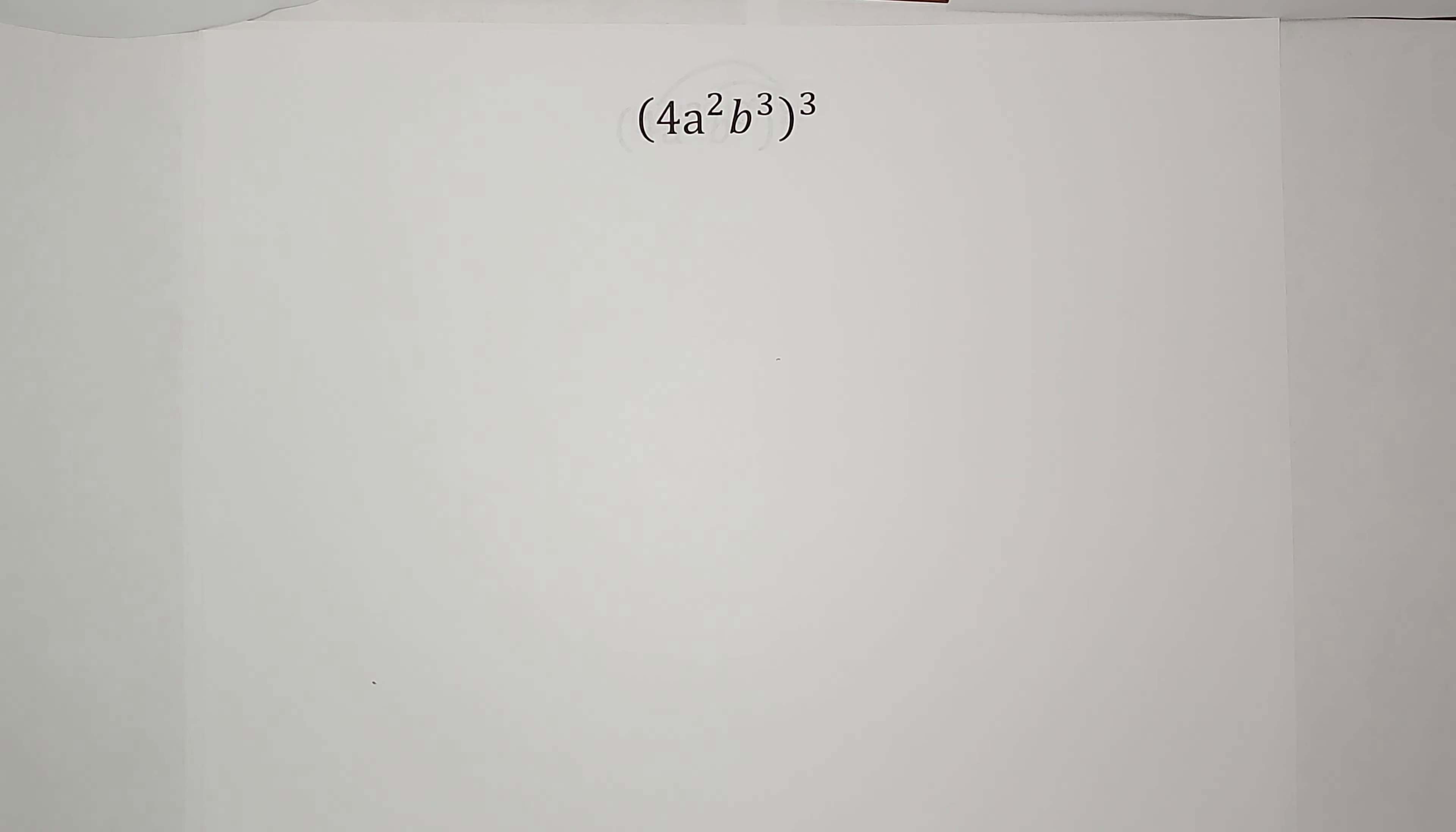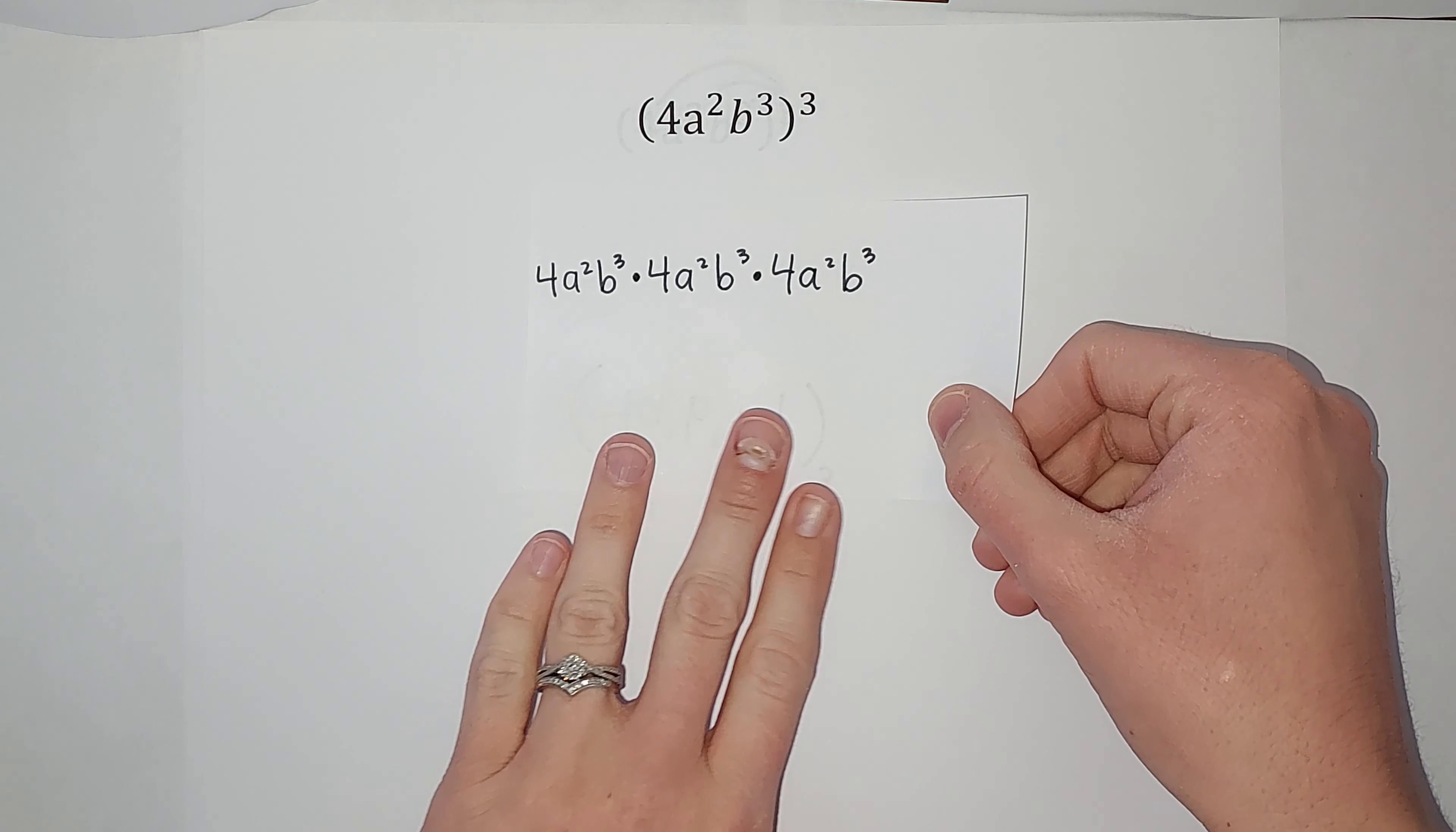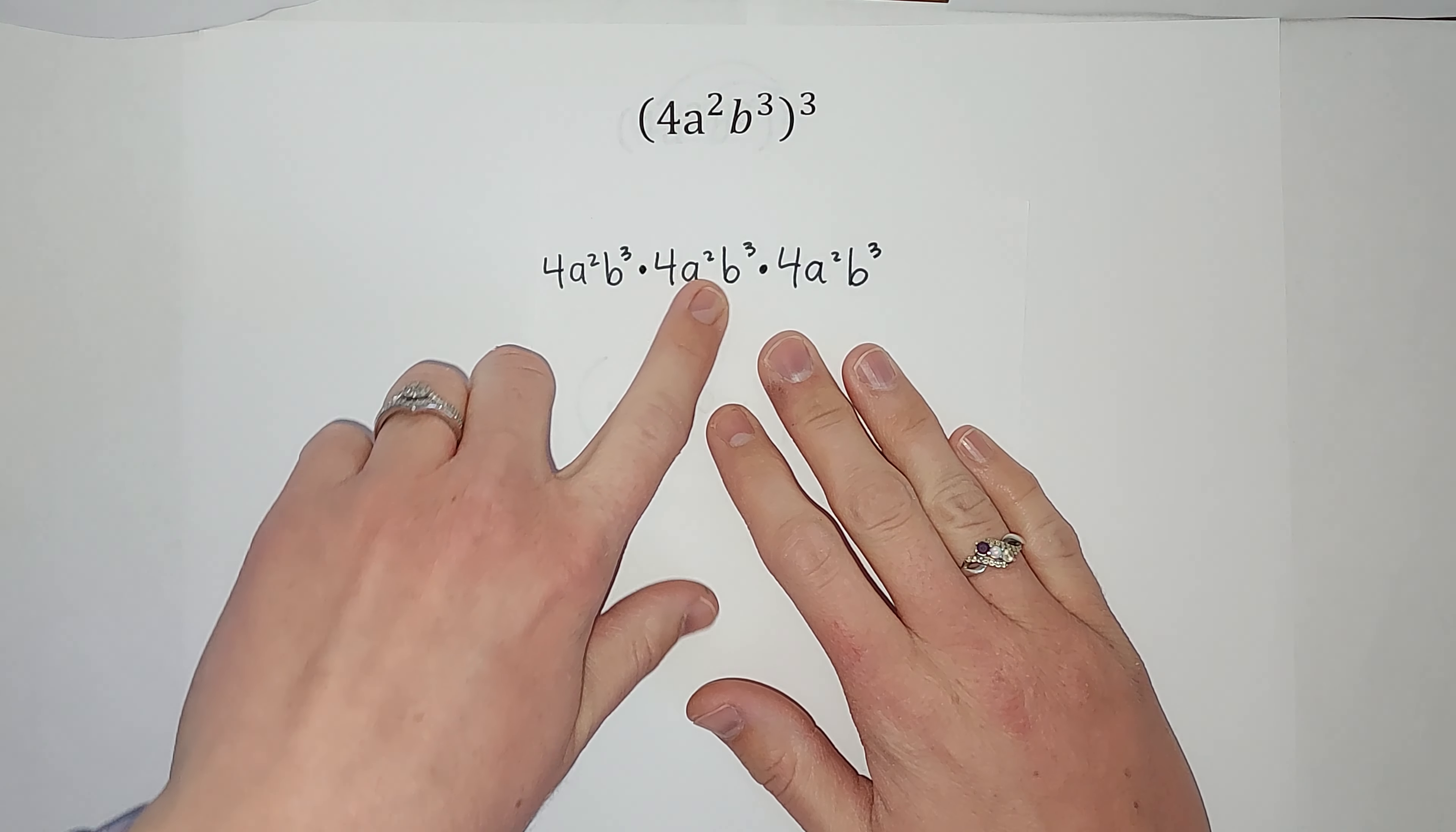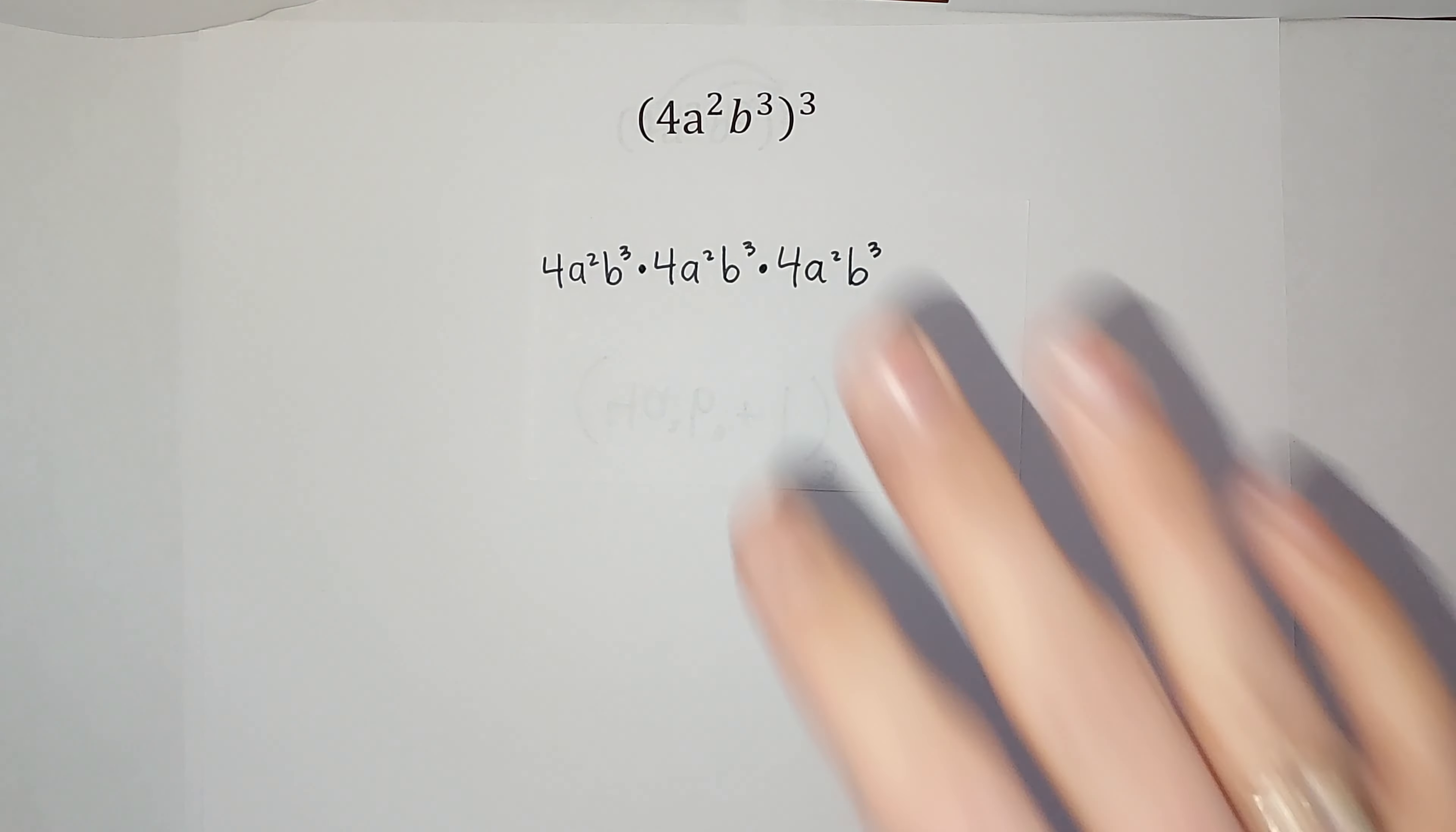If I wanted to write that out the long way, it would look like this: 4a squared b cubed times 4a squared b cubed times 4a squared b cubed. If you want to write it out like that, awesome, that's totally something I would do.